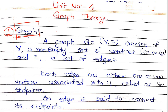Dear students, in this video we are going to study about the topic graph theory. Graph is defined as G is equal to V, E, where V is the set of vertices and E is the set of edges. So G = (V, E) consists of V as a non-empty set of vertices or nodes, and E as the set of edges.